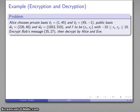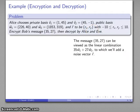So now Bob wants to encrypt a message, 35, 27, and then we want to show that Alice is able to decrypt it and Eve is not. So let's take a look at that.